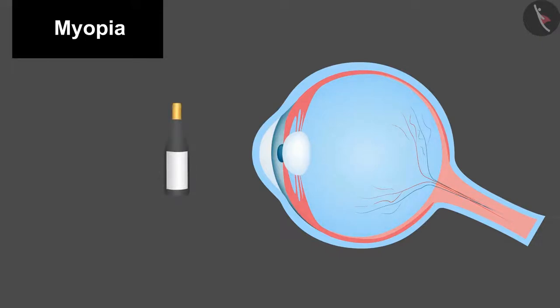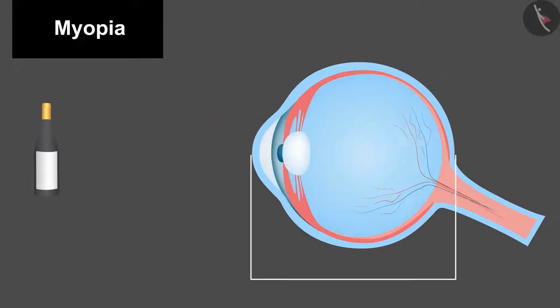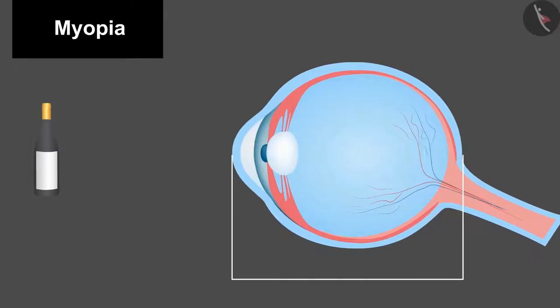The person having myopia is able to see the nearby objects but finds it difficult to see the distant objects clearly. In this, the image of the object forms not on the retina but in front of it. Now you may be wondering why the image is formed on the front of the retina instead of on the retina? They are formed because in this defect, curvature of the lens or the curvature or axial length of the eyeball increase, due to which the converging capacity of the eye increases and the image forms in front of the retina.